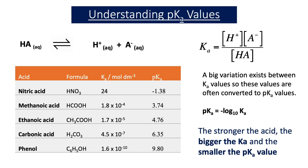In our previous videos, we've looked at Ka values and compared different acids in terms of their dissociation. We've also learned that these values often have a big variation in their size, and therefore a new term is considered: pKa, which is equal to minus the log of the Ka value. The stronger the weak acid, the bigger the Ka value and the smaller the pKa value.